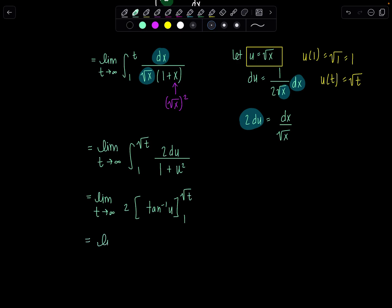Fabulous. And now evaluating at the upper and lower limits. Keep writing lim every step of the way. You guys don't drop that. 2 times tan inverse of the square root of t minus tan inverse of 1. And then in order to evaluate this limit...